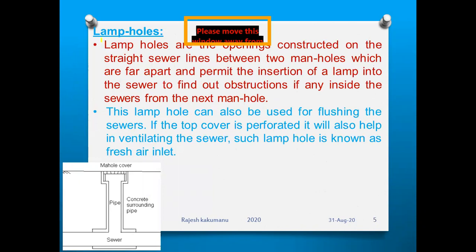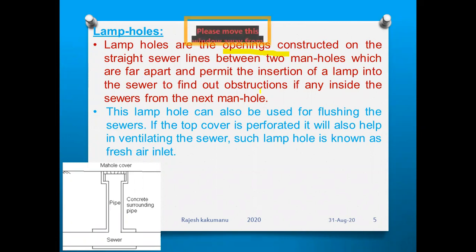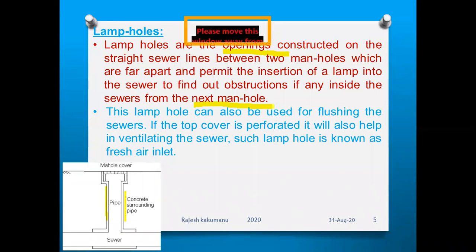The next appurtenance is lamp holes. These are openings constructed on straight-line sewer lines between two manholes that are far apart. They permit the insertion of a lamp into the sewer to find out obstructions, if any, and to inspect the sewers from one manhole to the next. Lamp holes are used to see what is happening — checking blockages, problems, and obstructions in the other manhole.